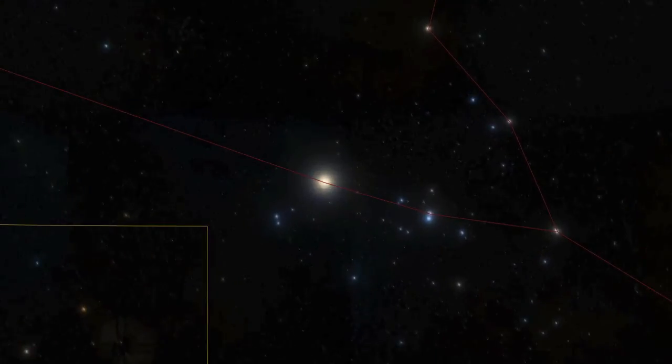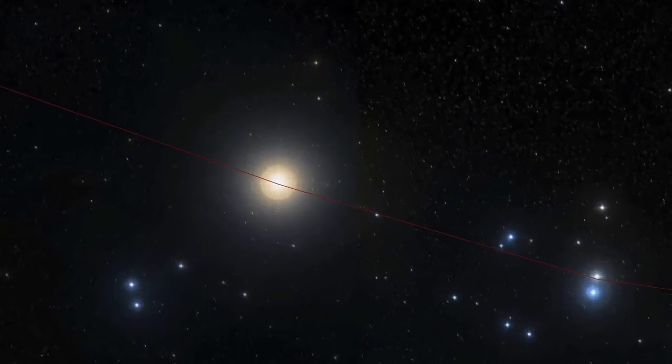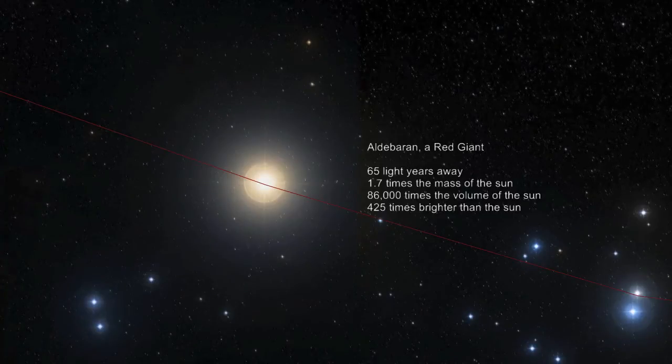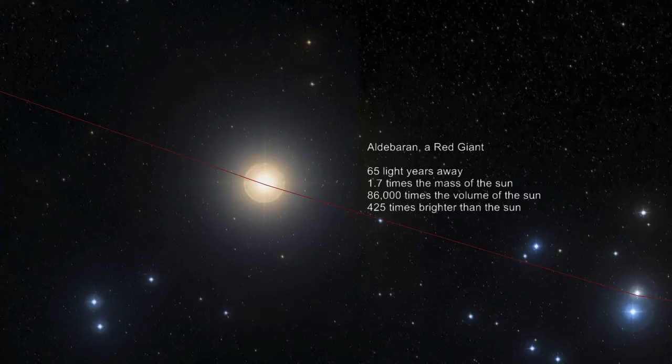Now we can go to the sky to see stars at different phases. First we have Aldebaran, a red giant star. It is not even twice the mass of the Sun, but because it is in the red giant phase, it would extend halfway to Mercury's orbit, could hold 86,000 suns, and is 425 times brighter than our Sun.